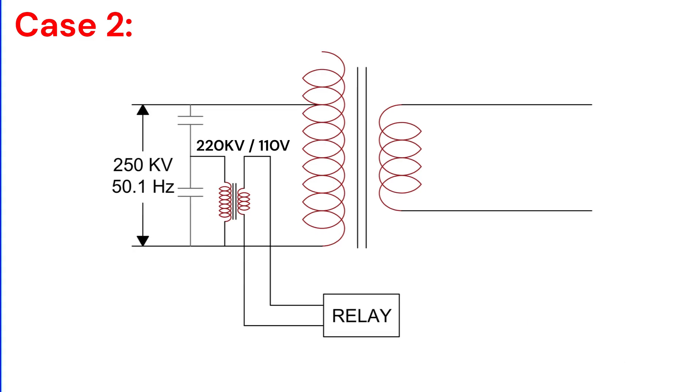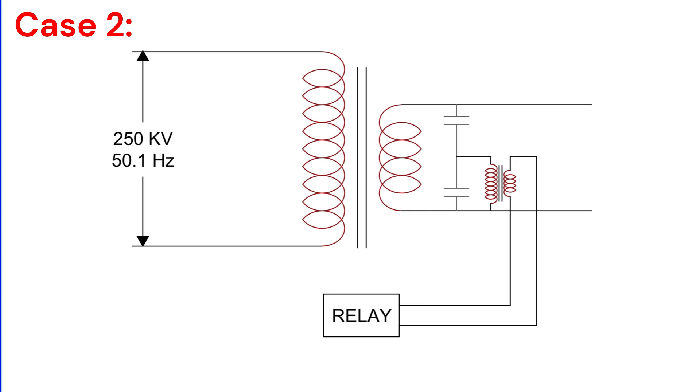Case 2: The transformer has a tap changer. Even if we increase the tap position to reduce the flux, the V/F ratio remains the same because the voltage signal is taken from the primary side PT, so the relay will still trip. But wait, there's a solution. If we take the voltage signal from the secondary side PT, increasing the primary turns will reflect proportionally on the secondary side, preventing unnecessary tripping.